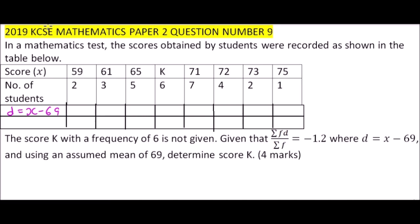x minus 69, where 69 is the assumed mean, and here we get fd, that is the product of f, the frequency, multiplied by d. So we fill up the rows. This is 59 minus 69 is minus 10, 61 minus 69 is minus 8, the other one is minus 4. Then we have, because we don't have the value there, we say K minus 69.